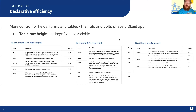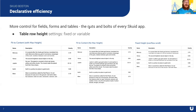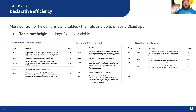Moving to the second theme: declarative efficiency. Your point-and-click, drag-and-drop tools in Skuid are where you spend a ton of time — specifically for probably 80% of your Skuid work, which is forms and tables. That's where data entry and data display happen. The first feature: table row height. You can give a table a max height but also allow it to expand to fit content, with scroll behavior controls as well.